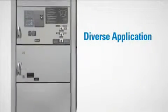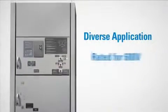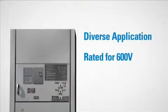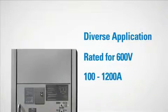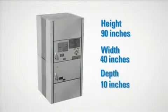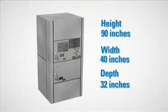The bypass isolation switch was constructed for use in a variety of applications. The unit is rated for 600 volts and ranges from 100 to 1200 amps. The structure itself is 90 inches high by 40 inches wide and 32 inches deep.